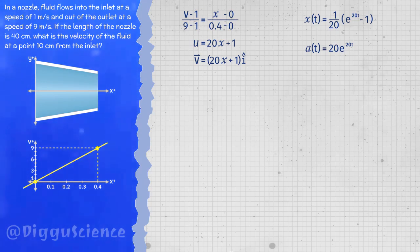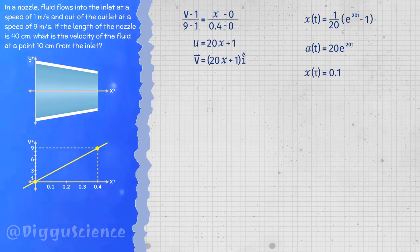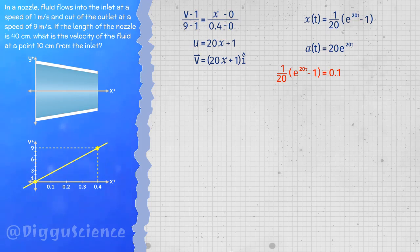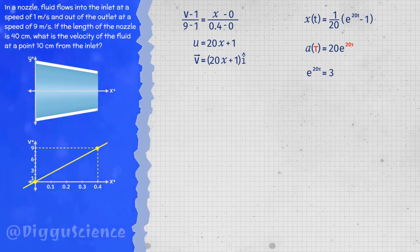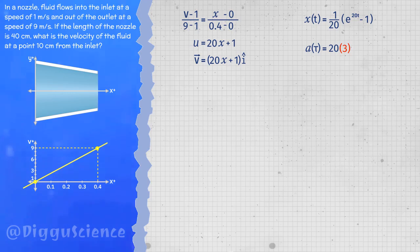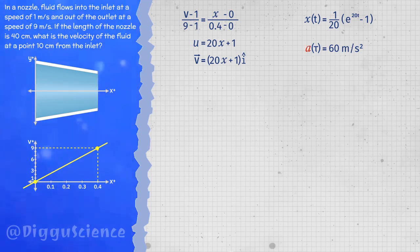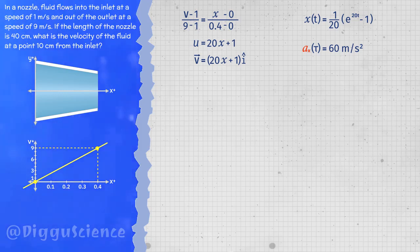Now we calculate the acceleration when the fluid particle reaches x equals 0.1 meters. Let tau be the time for the particle to reach 10 centimeters from the inlet. Substituting x equals 0.1 into the position equation and simplifying, we find that e^(20·tau) equals 3. The acceleration at tau is 20·e^(20·tau), and since e^(20·tau) equals 3, the acceleration equals 60 meters per second squared. Since the particle only moves on the x-axis, this is the x-component of acceleration, a_x equals 60 m/s², at a point 0.1 meters from the inlet.